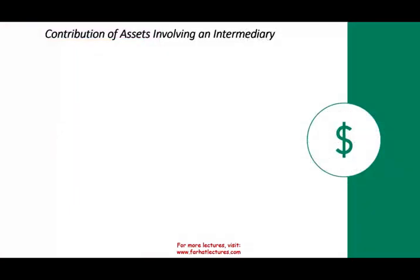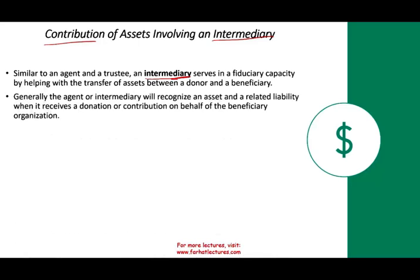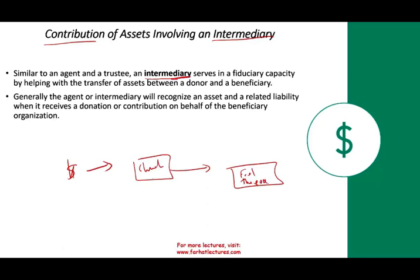One more topic: contribution of assets involving an intermediary. An intermediary serves in a fiduciary capacity, helping transfer assets between the donor and the beneficiary — similar to an agent or trustee in governmental accounting. Generally, the agent recognizes an asset and a liability. For example, if someone donates $100 to the church and the church is supposed to hold the money and give it to another organization to feed the poor, the church debits cash $100 and credits a liability $100. When they transfer the money, they debit the liability and credit cash.